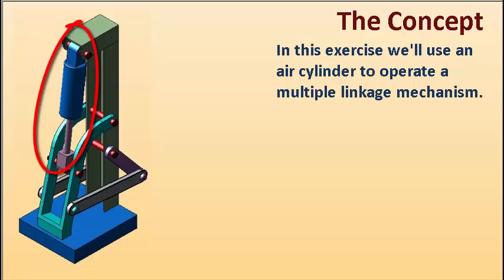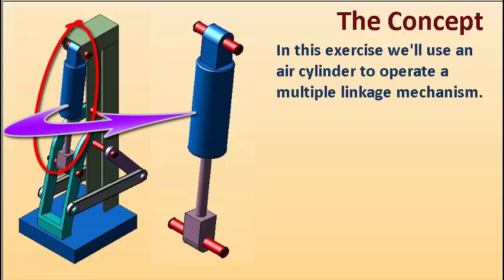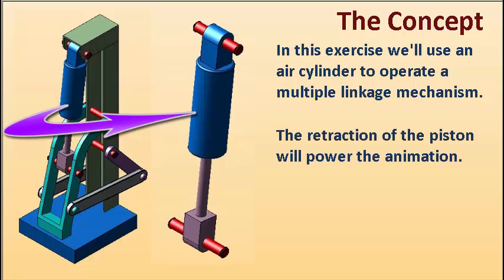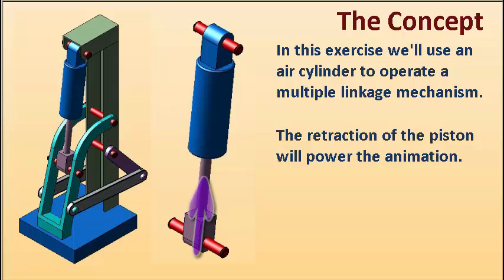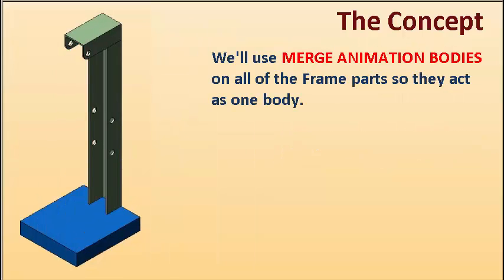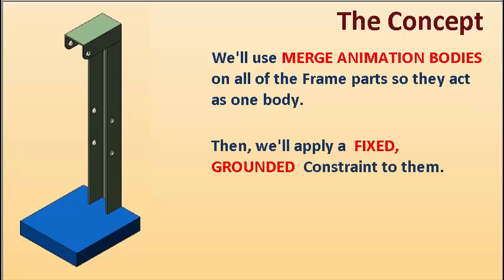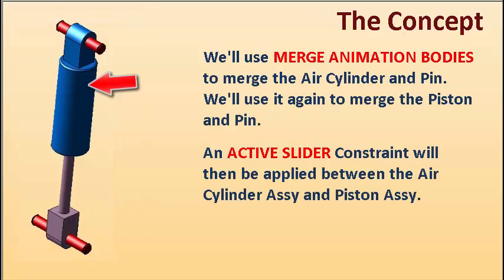In this exercise we'll use an air cylinder to operate a multiple linkage mechanism. The retraction of the piston will power the animation. We'll use merge animation bodies on all the frame parts so they act as one body, then we'll apply a fixed grounded constraint to them.